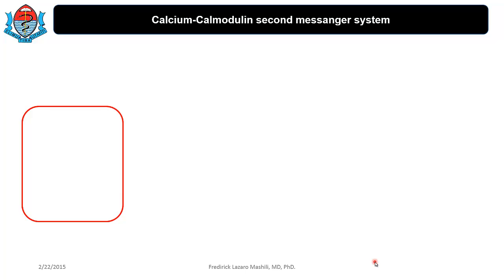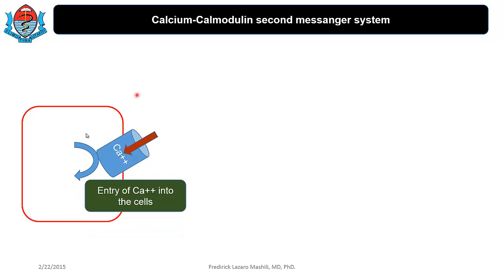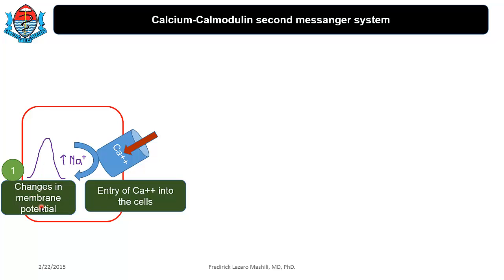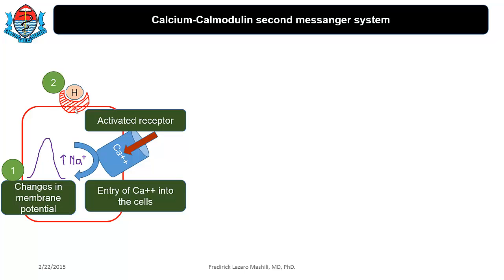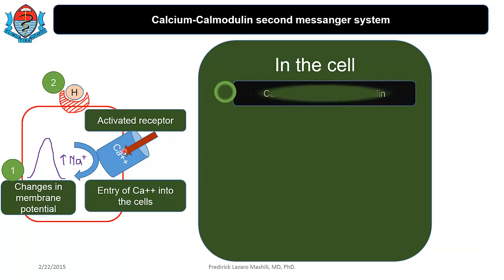The last one is the calcium-calmodulin second messenger system. As the name implies, calcium is involved. You have changes in permeability to calcium, so there is increased influx of calcium into the cells. What brings about this increase in calcium permeability? It can be due to changes in membrane potential — when you have influx of sodium and generation of an action potential, this increases permeability to calcium so calcium moves into the cells to bring about muscle contraction. You also have a hormone-receptor complex where the activated receptor changes permeability to calcium, causing calcium to enter the cell and bring about a biological response.